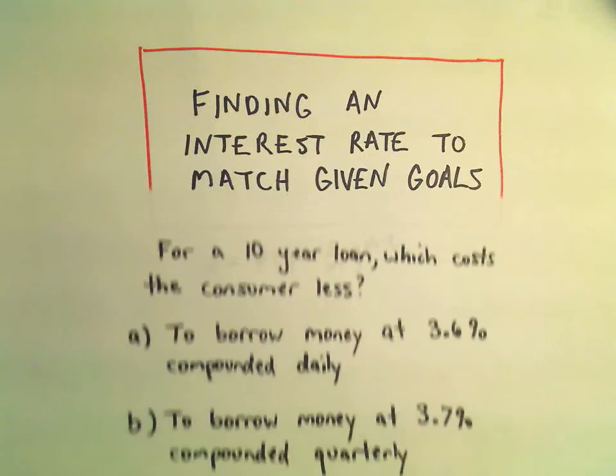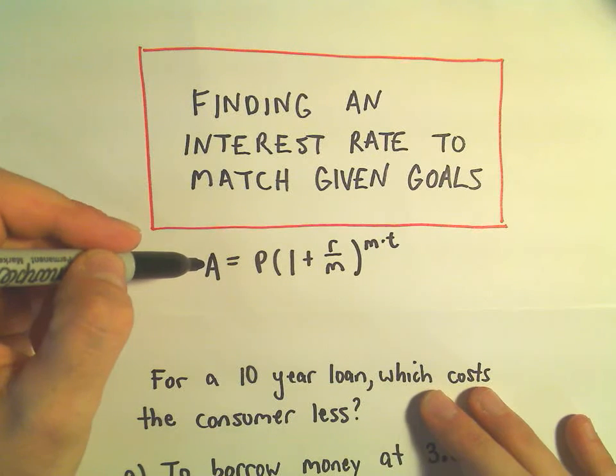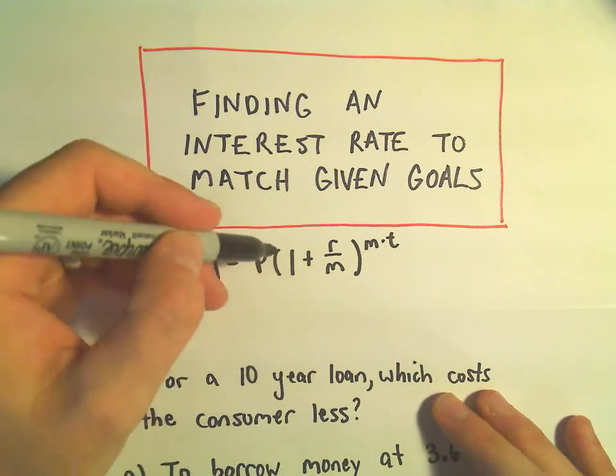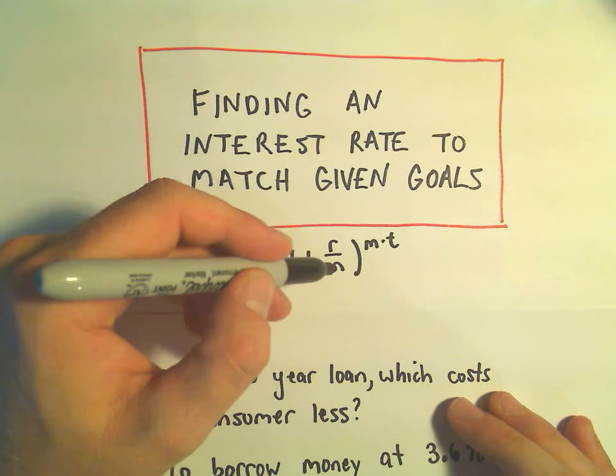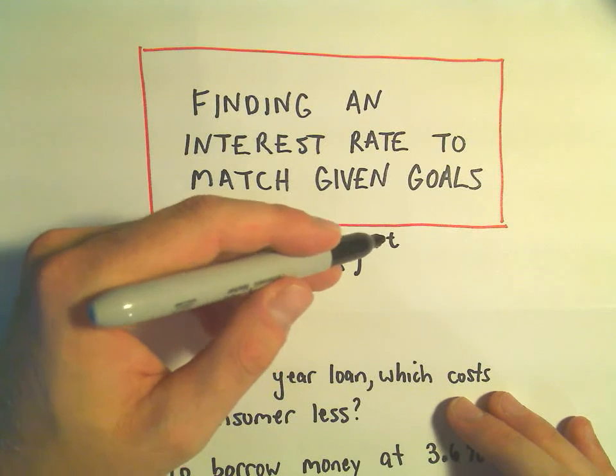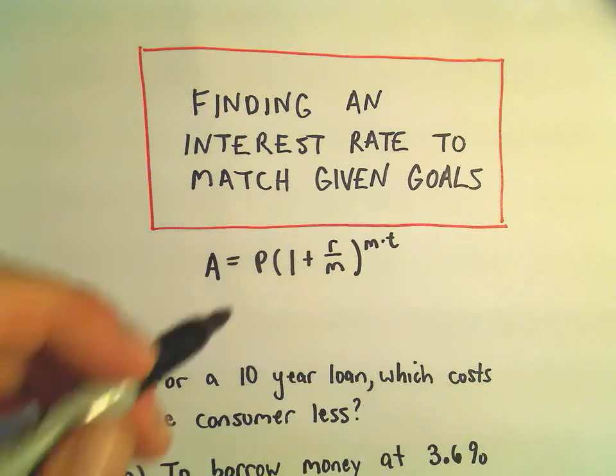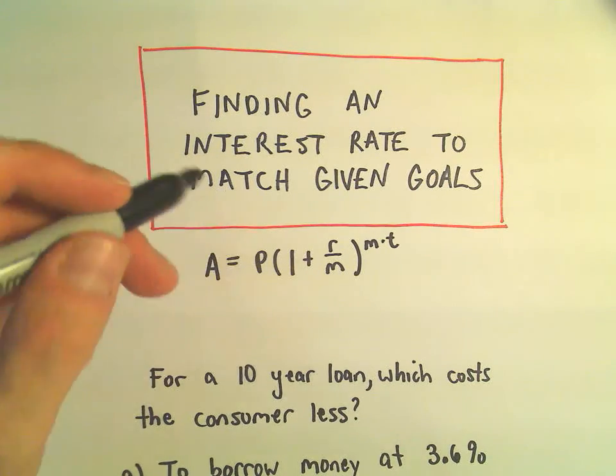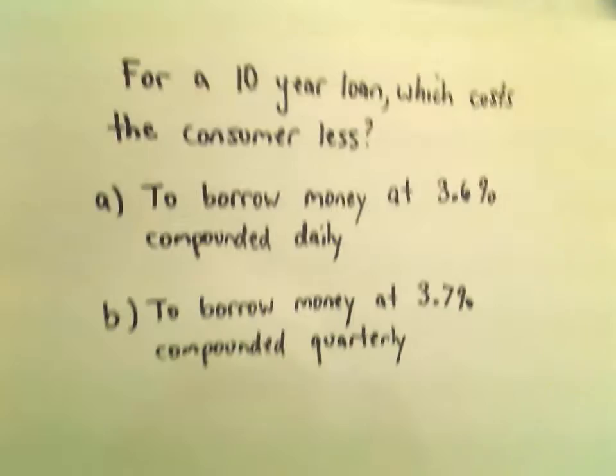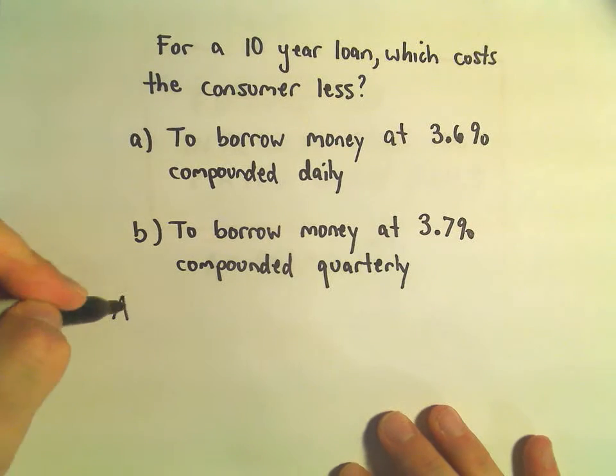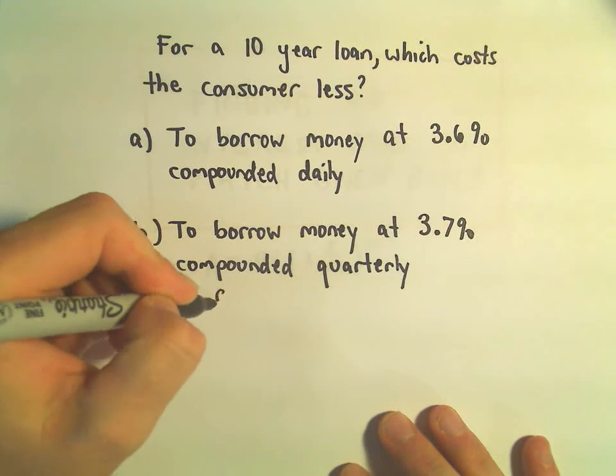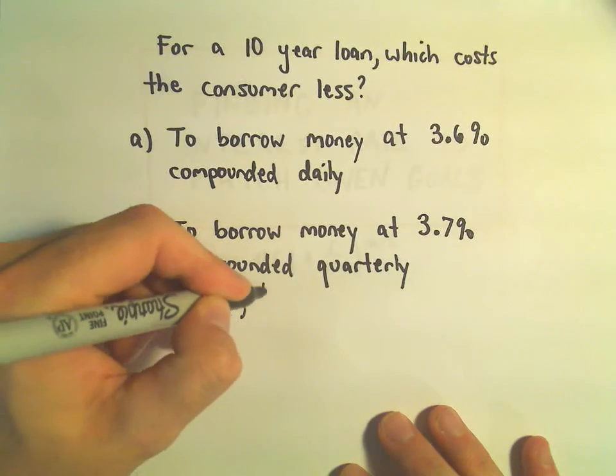We want to know which one of those is better. So I'm going to use our formula here: A equals P times 1 plus r over m raised to the m times t. Notice we don't have any starting principal in this case, but you can really just make one up. It's really kind of irrelevant as long as we use the same principal in both cases.